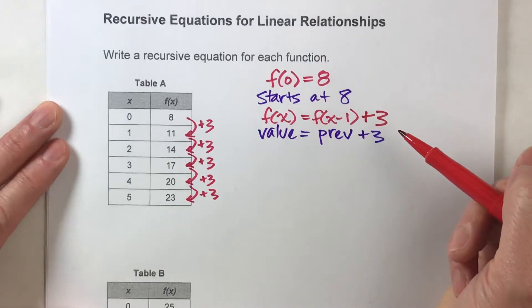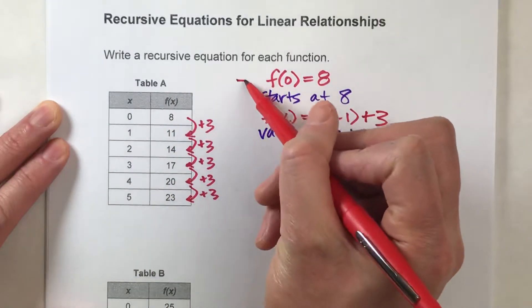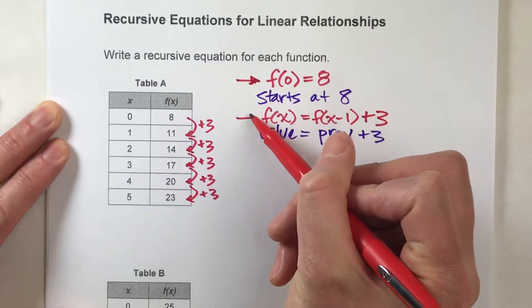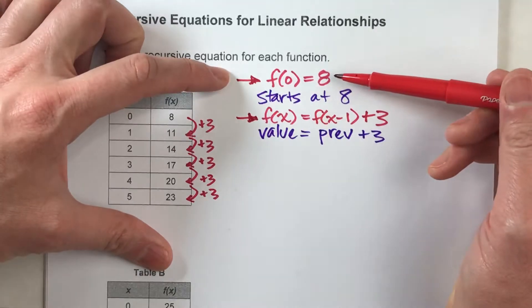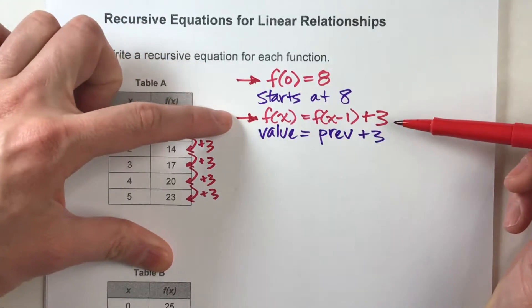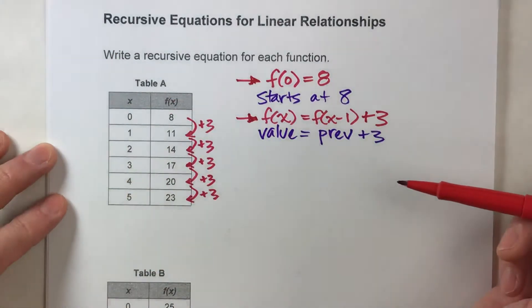There it is. So, our recursive equation for this table would be these two parts. There's two parts to it. The fact that it starts at 8, and the pattern is that we take the previous value and we add 3 to it.